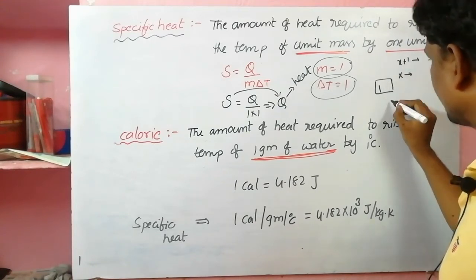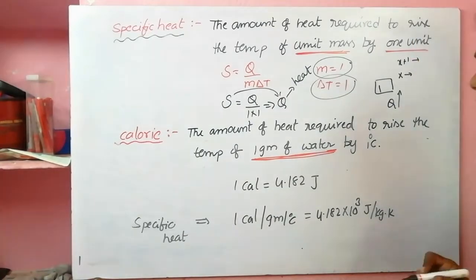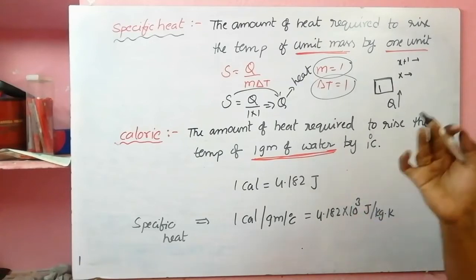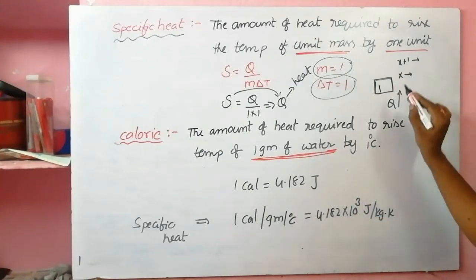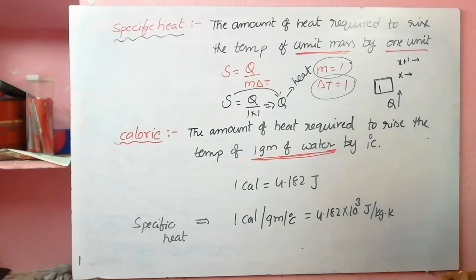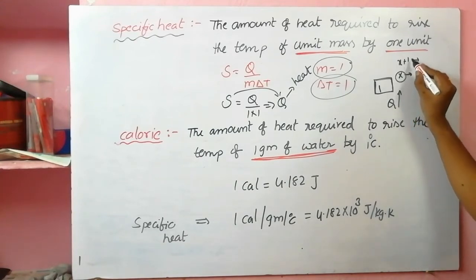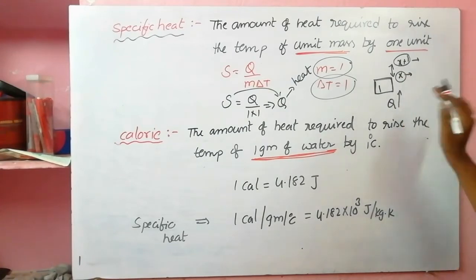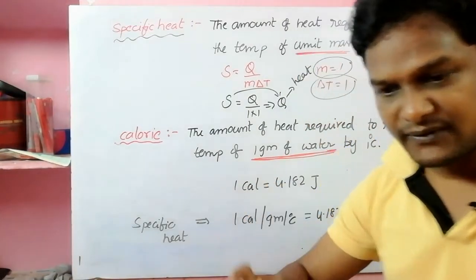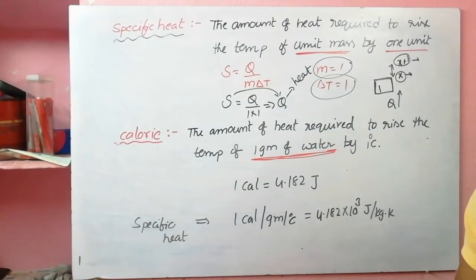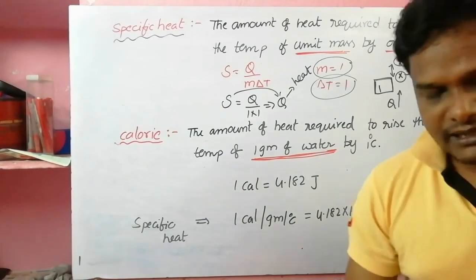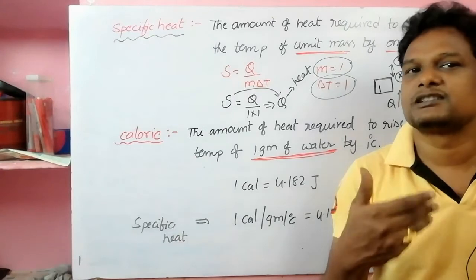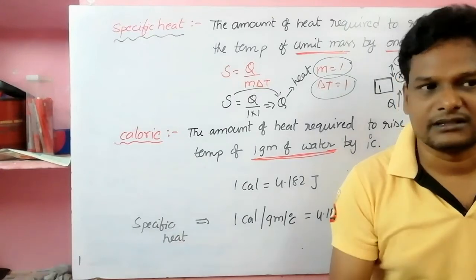Suppose a substance has a mass of one unit — one kg or one gram. Initially it is at temperature X. To bring it to temperature X plus one, we need to supply some heat. That supplied heat is called the specific heat capacity of that substance. This depends upon the nature of the substance — it is different for different materials.